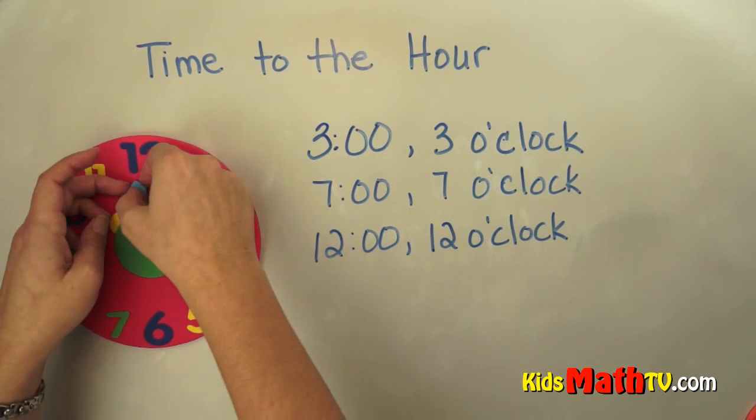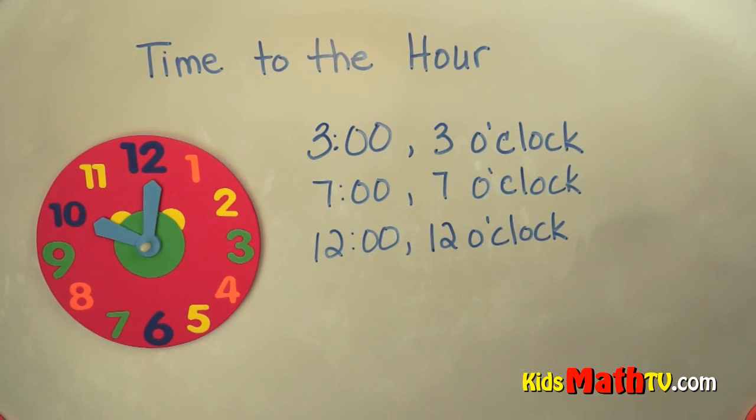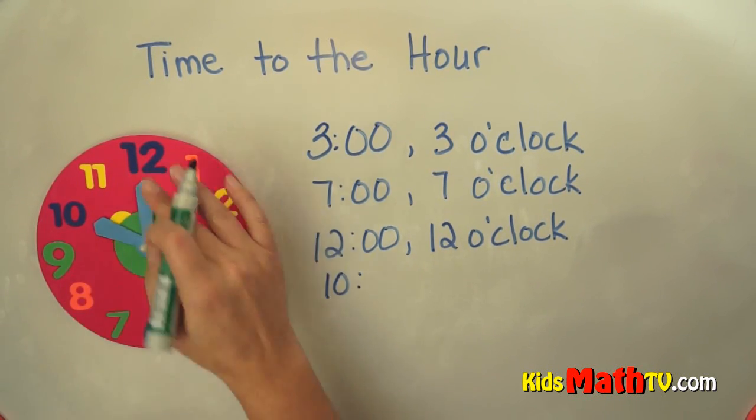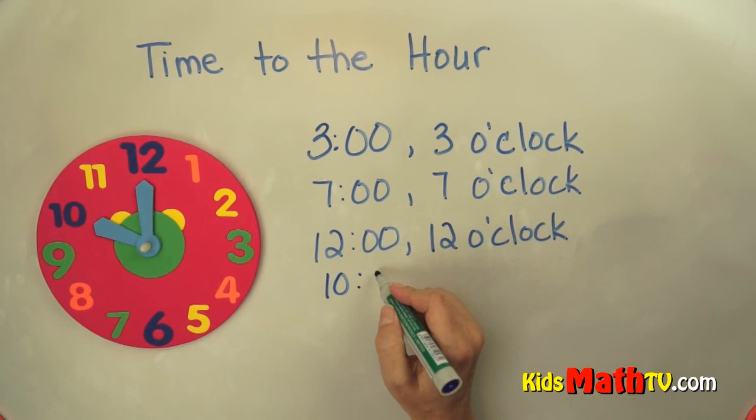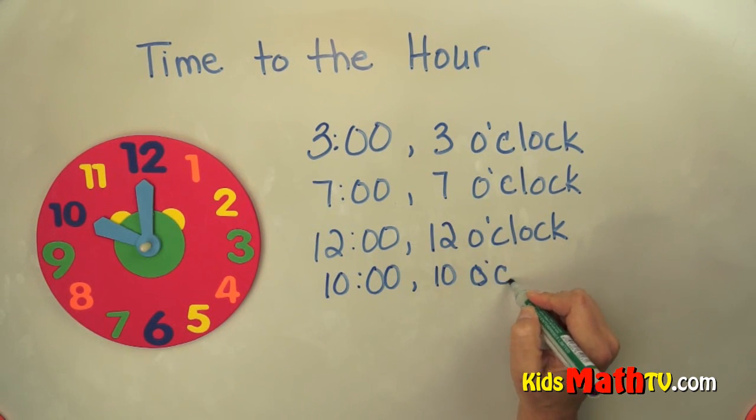So let's try another one. What if I have it like this? What does this show? I look at the little hand first. The little hand is on the 10 and the big hand is straight up and down at the 12. So that says o'clock. 10:00, 10 o'clock.